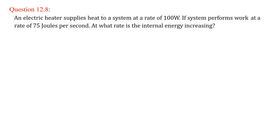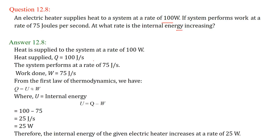An electric heater supplies heat to a system at a rate of 100 watts. If the system performs work at a rate of 75 joules per second, at what rate is the internal energy increasing? The heat supplied Q is 100 joules per second. The work done W is 75 joules per second. From the first law of thermodynamics, Q equals U plus W, so internal energy U equals Q minus W, which is 100 minus 75 equals 25 joules per second, that is 25 watts. So the internal energy of this system increases at a rate of 25 watts.